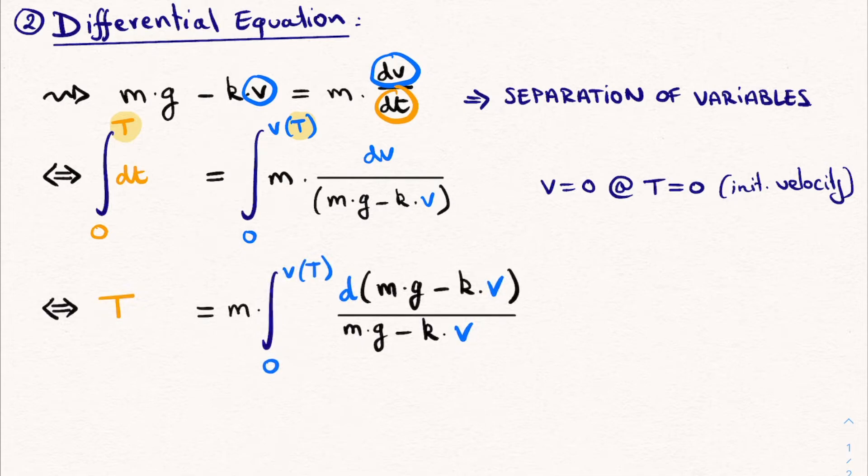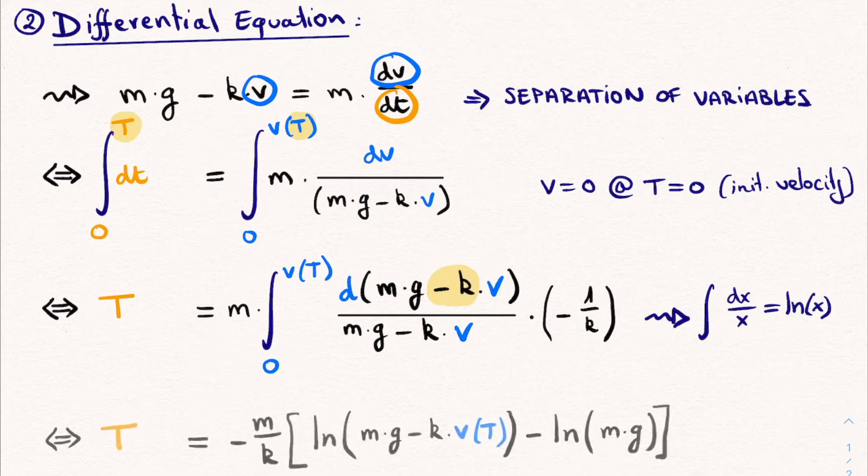The left-hand side is very straightforward. This will simply be this arbitrary time capital T. On the right-hand side, we use this substitution method. We go from dv to d(mg - kv). And because we multiplied v with minus k, we need to compensate this by multiplying by minus 1 over k. Having done this, we see that we get an integral of d something divided by that very something. And you probably recognize this type of integral, which has as a result the logarithm of that something. This makes this integral very straightforward to compute, simply the logarithm of whatever is inside of these d brackets filled in in its boundaries.